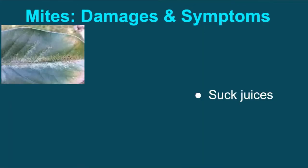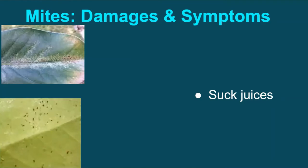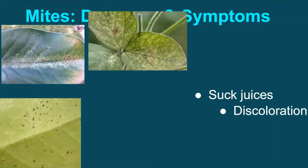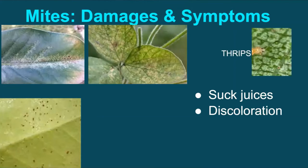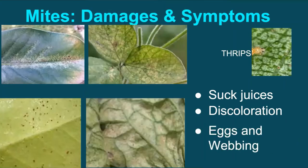Mites damage crops by piercing plants and sucking the plant juices. Due to their small size, mites are often overlooked on crops at early stages of infestation. However, the first evidence of mite feeding is top degradation — that is, yellow or whitish spots similar to that caused by thrips. This can be easily identified by checking the undersurface of leaves for the presence of mites, eggs, and webbing.